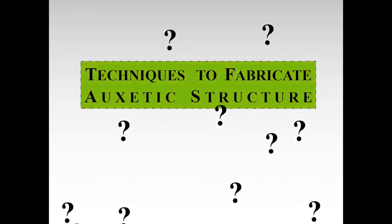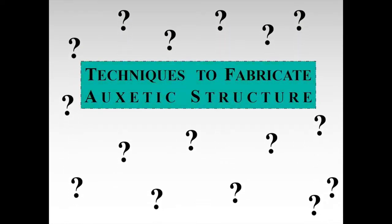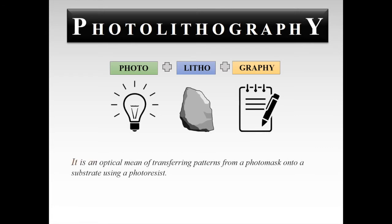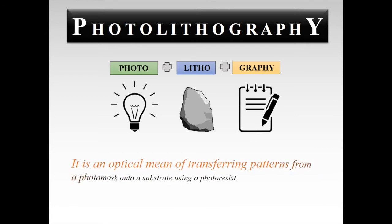But how can we fabricate these kinds of structures? There are multiple ways to do this, but we're going to focus on the combination of two optical means of making auxetic structures. The first process is photolithography. This word is comprised of three different Greek words: Photo, which means light; Litho, which means stone; and graphi, which means writing. As the name suggests, the process uses light to transfer a pattern onto a surface with the help of a photomask and a photoresist.